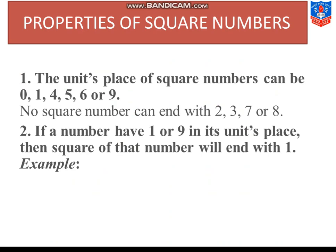Now students, properties of square numbers one by one discuss karenge. The first property, I've already explained to you. The units digit, units place of square numbers can be 0, 1, 4, 5, 6 or 9, not other than that. Like no square number can end with 2, 3, 7 or 8. I think you must, everyone is clear about this.